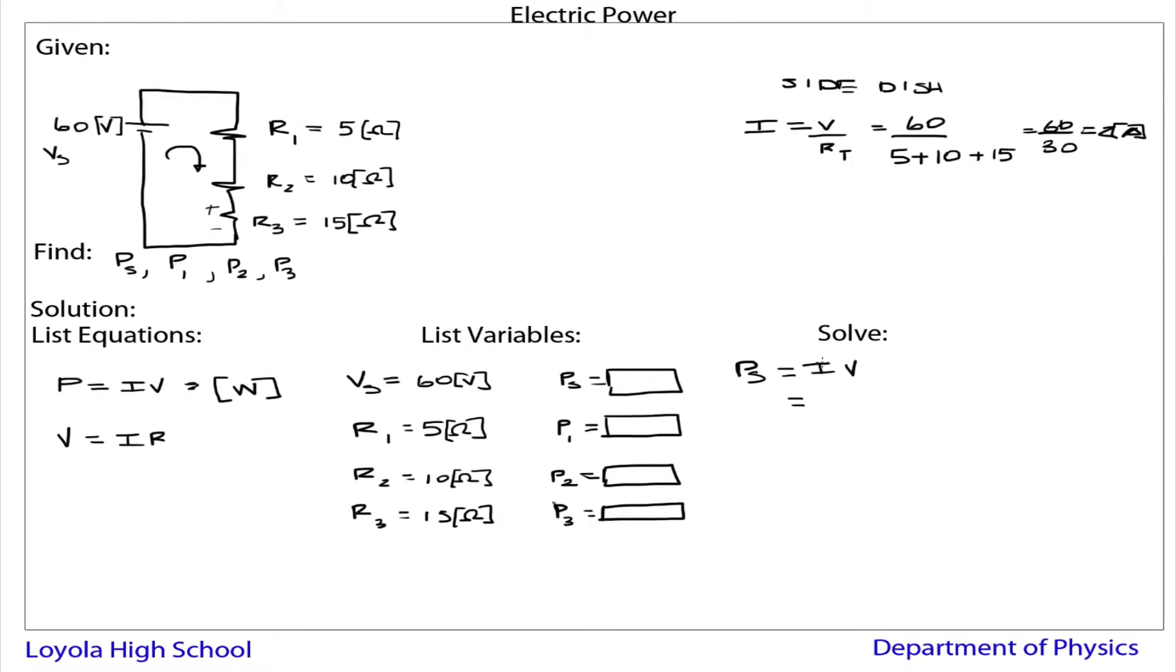So for the power supply, it's 2 amps runs through the power supply, and it's a 60 volt supply, so that's 60. So 2 times 60 is 120. 120 watts. That's how much power supplied by there.